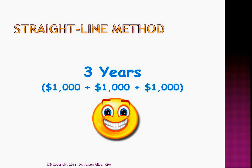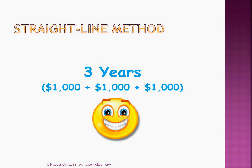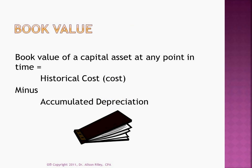After the first year, accumulated depreciation would be $1,000. After the second year, accumulated depreciation would be $2,000. After the third year, accumulated depreciation would be $3,000 and so on. Notice then that the book value of a capital asset at any point in time is simply its historical cost minus its accumulated depreciation.